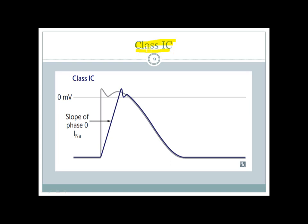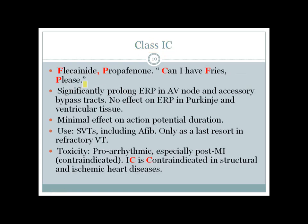Class 1c agents also decrease the slope of depolarization like other class 1 agents, but they significantly prolong the effective refractory period especially in the AV node and accessory bypass tract — not in the ventricular muscle. The drugs are remembered as 'Can I have fries please': Flecainide and Propafenone. There is no effect on the refractory period in Purkinje fibers or ventricular tissue.